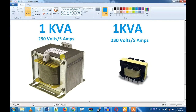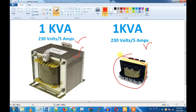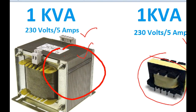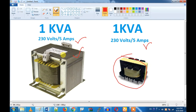Hi friends. In this video, we are going to take a look at two transformers — for example, a one kVA transformer. We are going to look at the difference in size between the two. They have the same voltage rating and 5A current rating. We will look at the right-hand side, the control panel, the 24-volt supply, and the transformer used in SMPS power circuits.